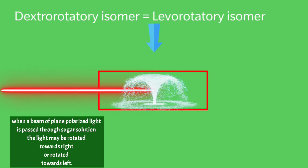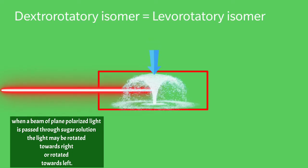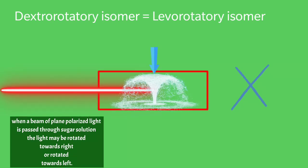Coming to third situation, when equal amounts of dextrorotatory and levorotatory isomers are present in a solution and when light is passed through that solution, that particular mixture does not show any optical activity. That means light is neither rotated towards right or left. That is because due to equal dextrorotatory and levorotatory activities, both will get cancelled.